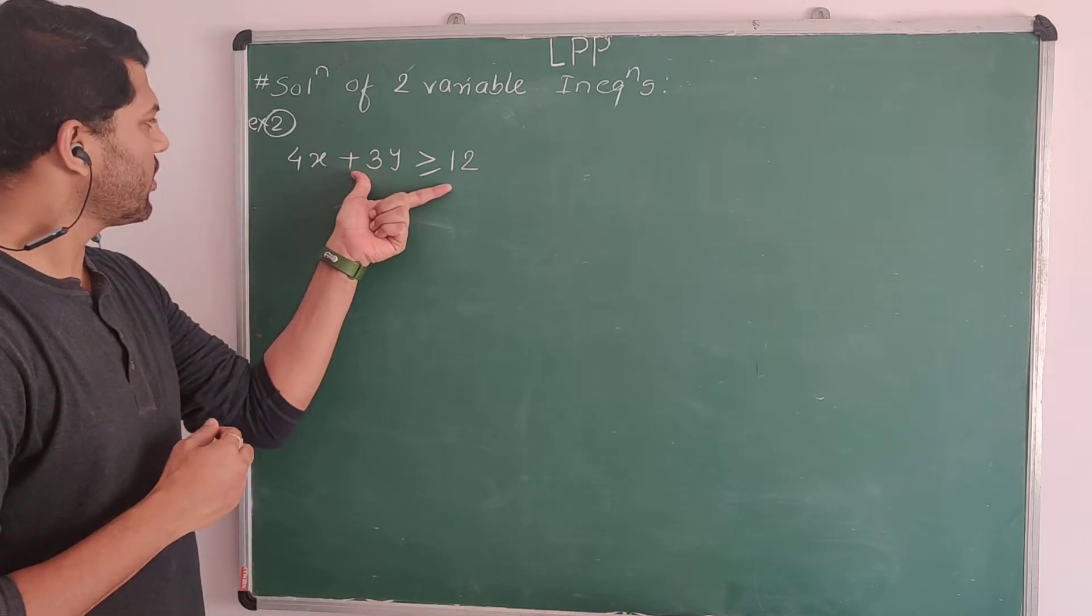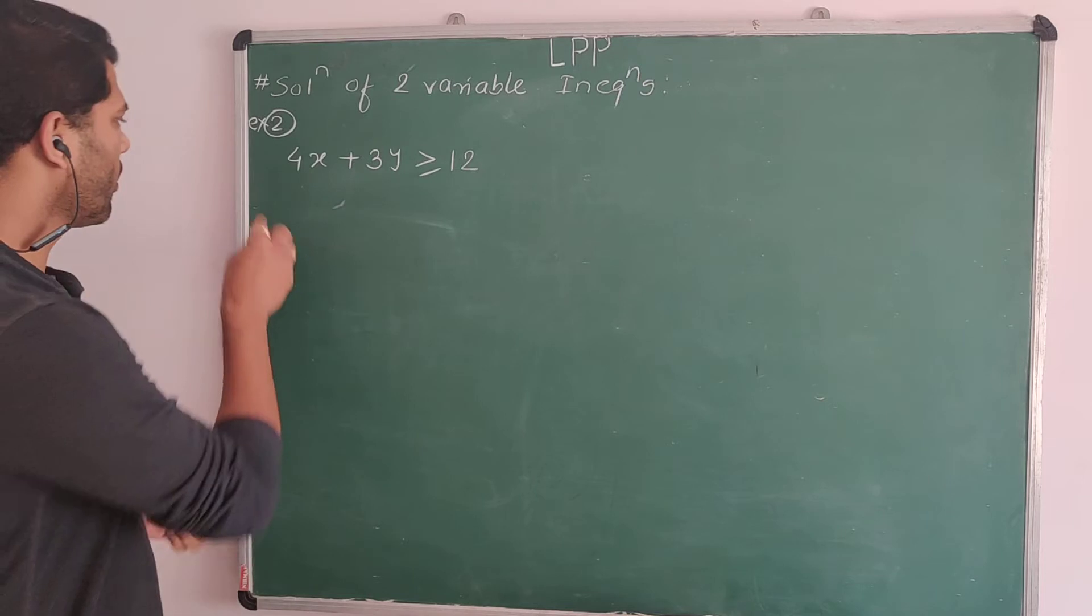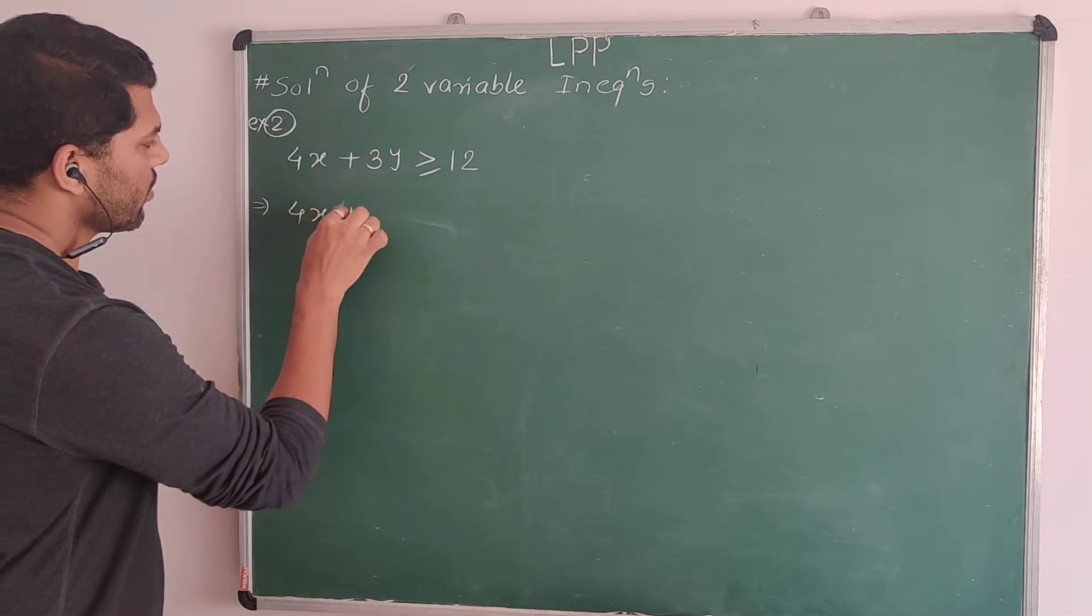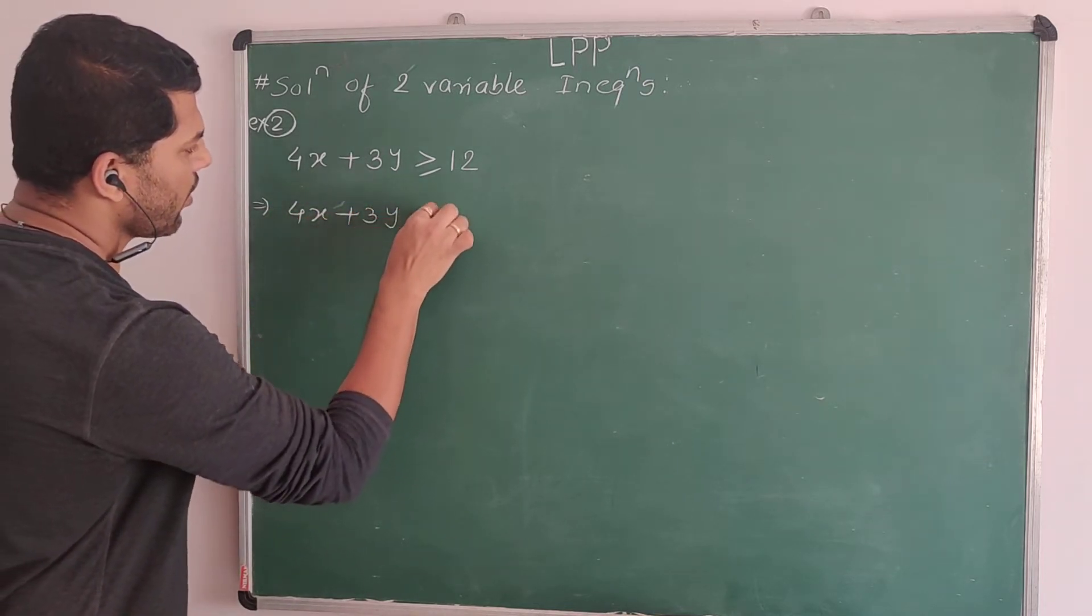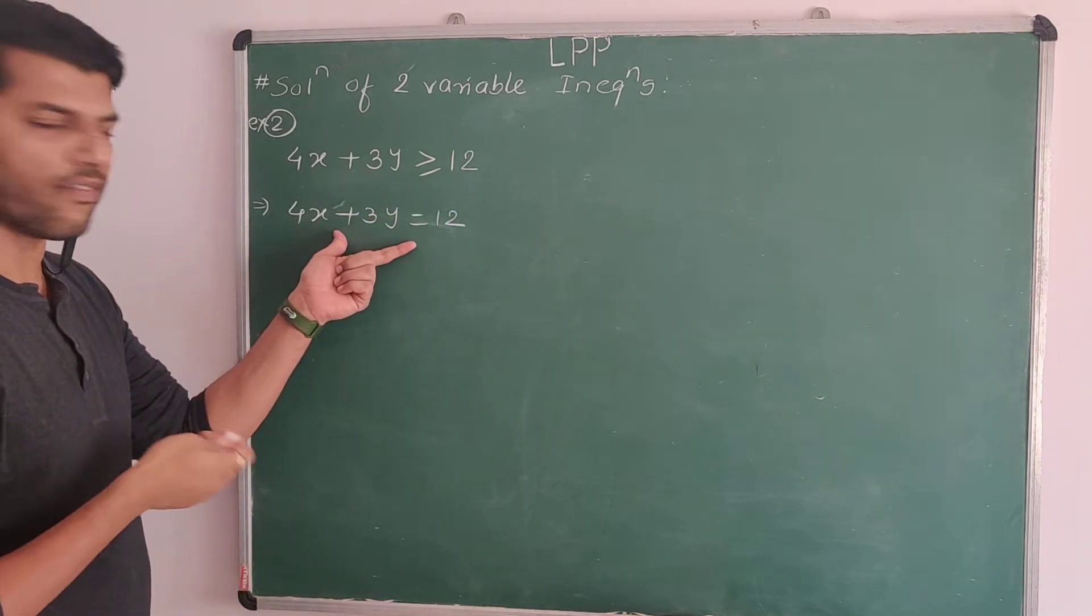I am considering this inequality 4x plus 3y greater than or equal to 12. Convert this into equality first. 4x plus 3y equal to 12, which is nothing but an equation of a line.